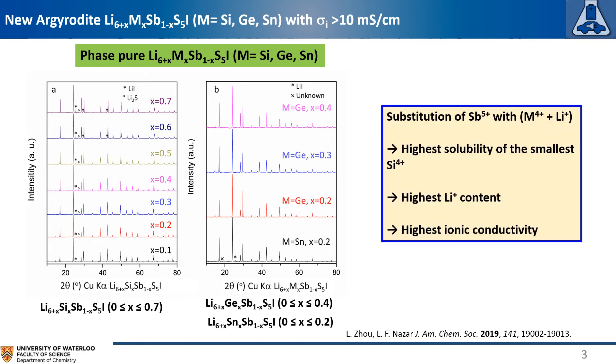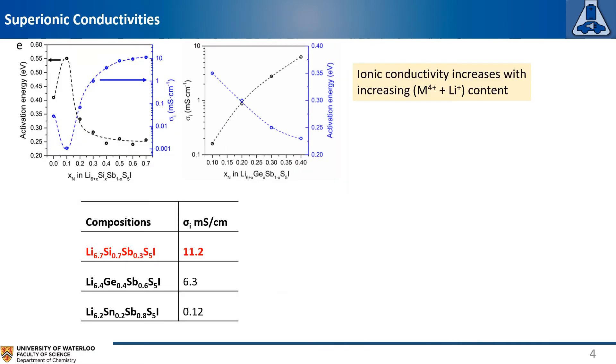The smallest silicon 4+ cation leads to highest solubility and highest lithium content. The high lithium content leads to high ionic conductivity. With increasing lithium content, a clear drop of activation energy and increase of ionic conductivity was observed for each series.